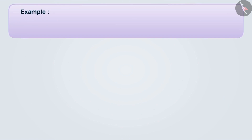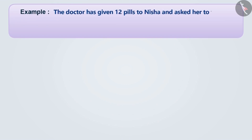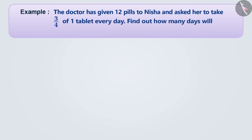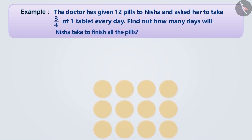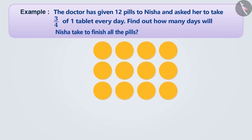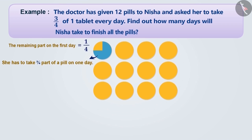The doctor has given twelve pills to Nisha and has asked her to take three-fourths of one tablet every day. Find out how many days will Nisha take to finish all the pills. Nisha consumes three-fourths of the pill every day. On the first day, consuming three by four parts of the tablet will save her one-fourth part. Similarly, on the second and third day, after taking three-fourths of the tablet, one-fourth part will be saved.